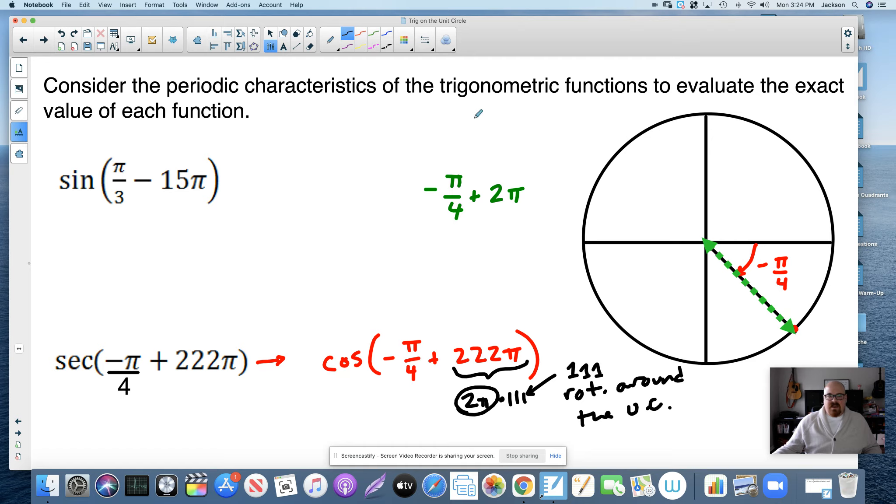So if we take this, and I'm not going to do all of them, but if I add 2 pi once, there's 2 pi. Add it again, there's 4 pi. Add it again, there's 6, 8, 10. I can do 111 of these. I'm still going to end up here.